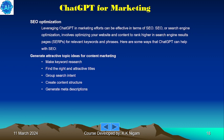SEO optimization: leveraging ChatGPT in marketing efforts can be effective for search engine optimization, which involves optimizing your website and content to rank higher in search engine results pages for relevant keywords and phrases. Some ways ChatGPT can help with SEO include generating attractive topic ideas for content marketing, conducting keyword research, finding effective titles, grouping search intent, creating content structure, and generating meta descriptions.